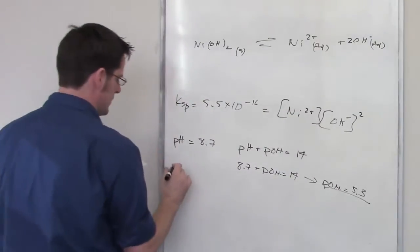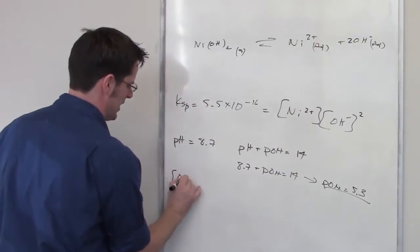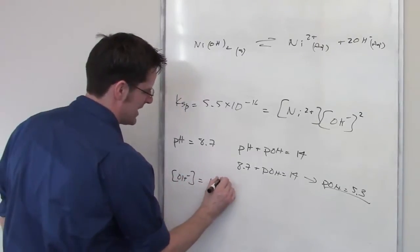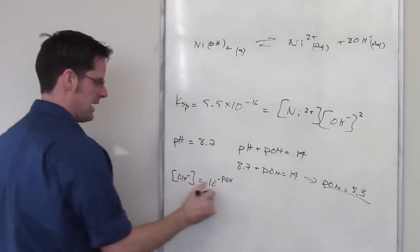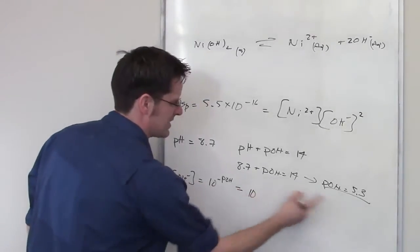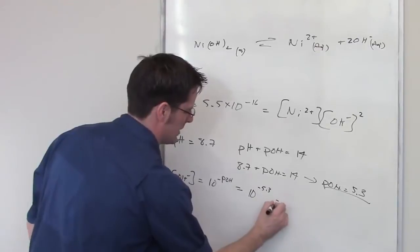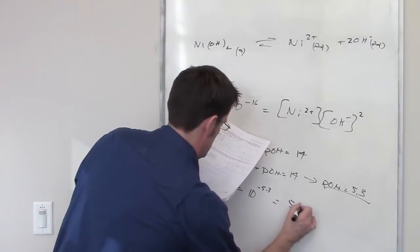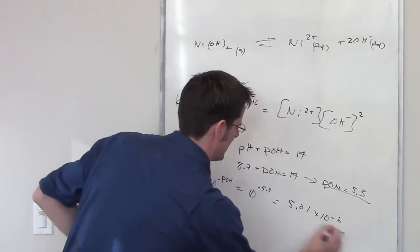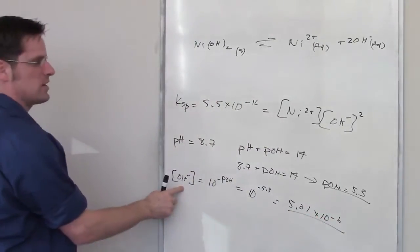Well, there exists an equation that tells you that the hydroxide ion concentration is equal to 10 raised to the negative pOH. I don't even know if we've used that before, but I can figure that out. 10 raised to the negative 5.3 is going to be equal to a number, and that number happens to be 5.01 times 10 to the negative 6. That's the concentration of hydroxide.